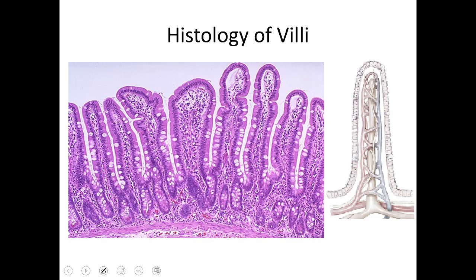Looking at the histology of the villi up close, we can see some goblet cells. We'll have loads of goblet cells throughout our GI tract to help maintain lubrication and keep food moving forward.